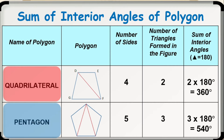Next, we have a pentagon. A pentagon has five sides. On the figure shown, we have three triangles formed. Thus, to get the sum of the interior angles, we multiply 3 with 180 degrees, giving us 540 degrees.